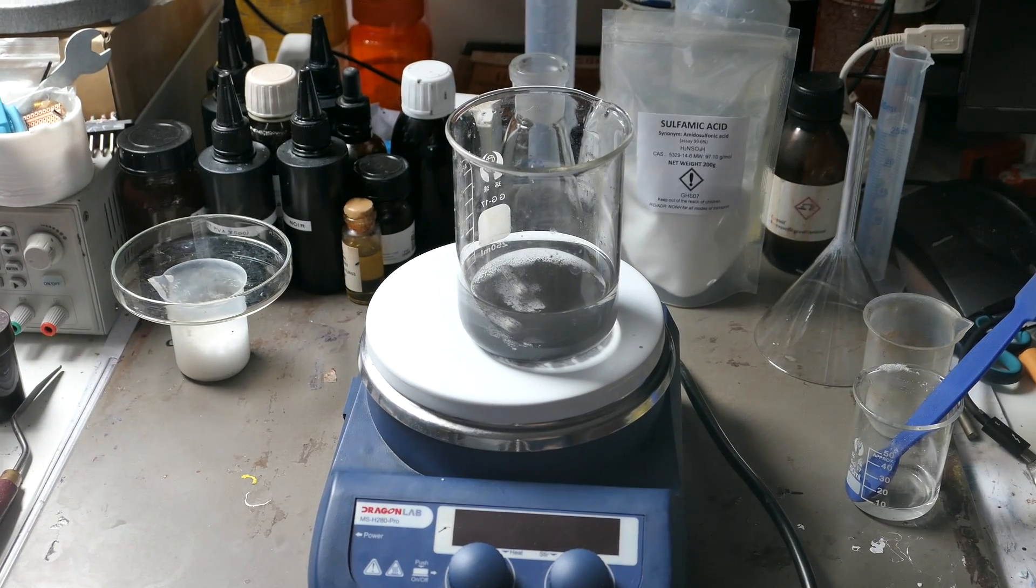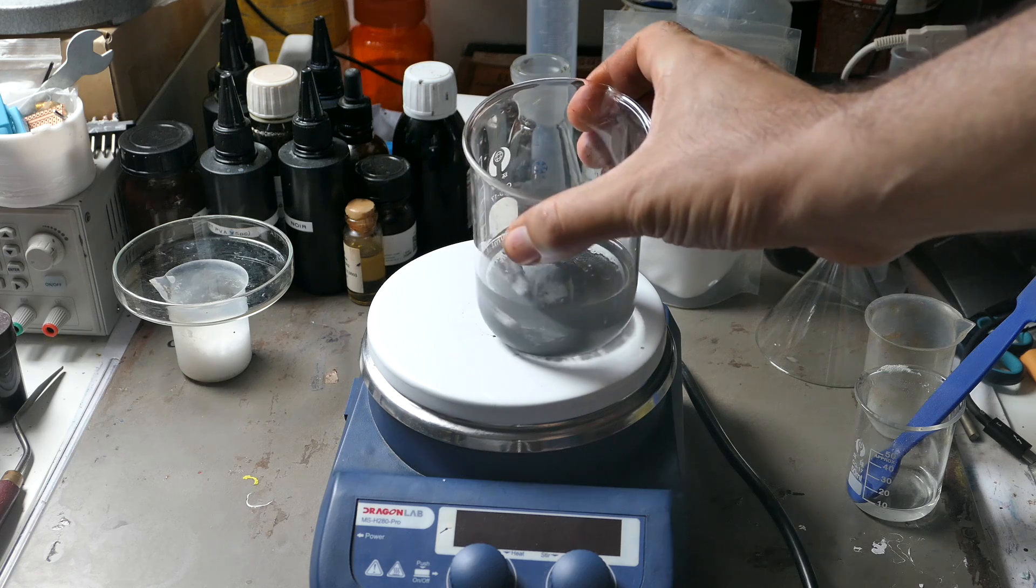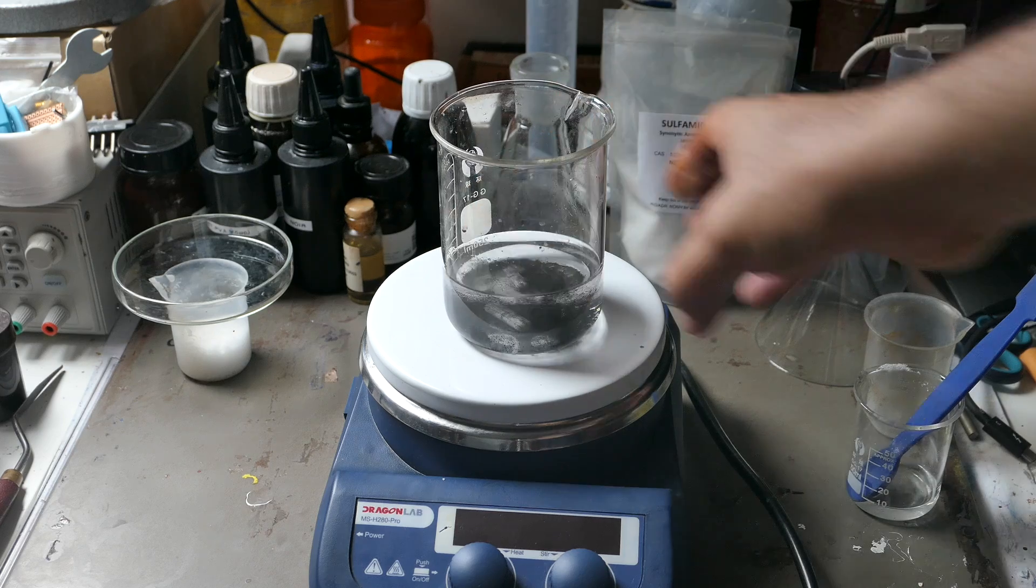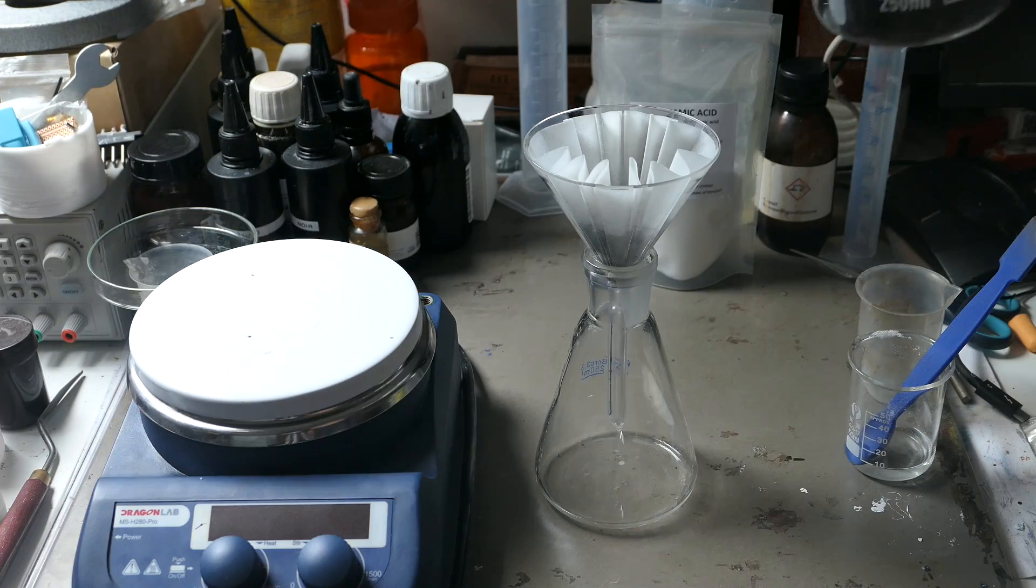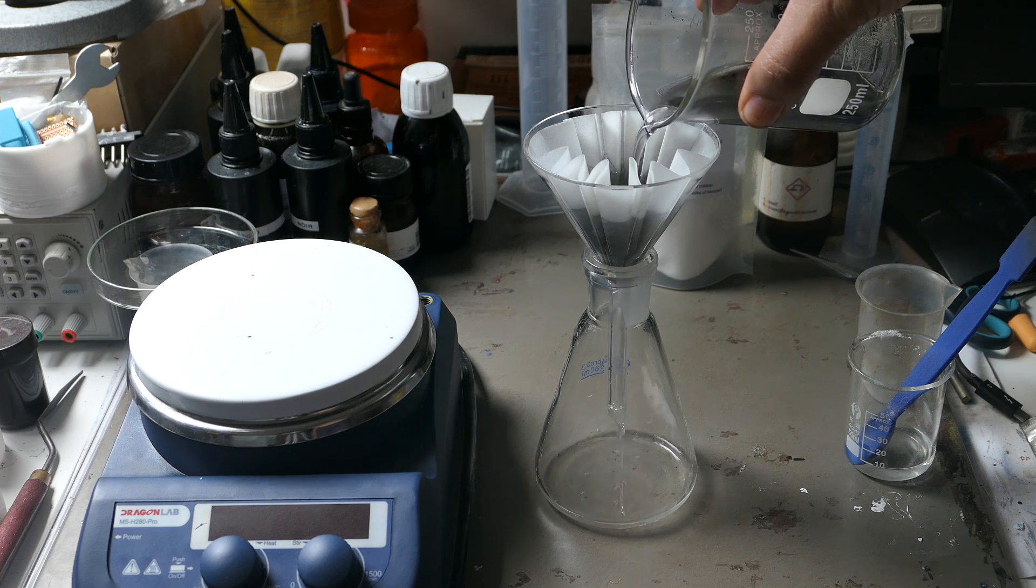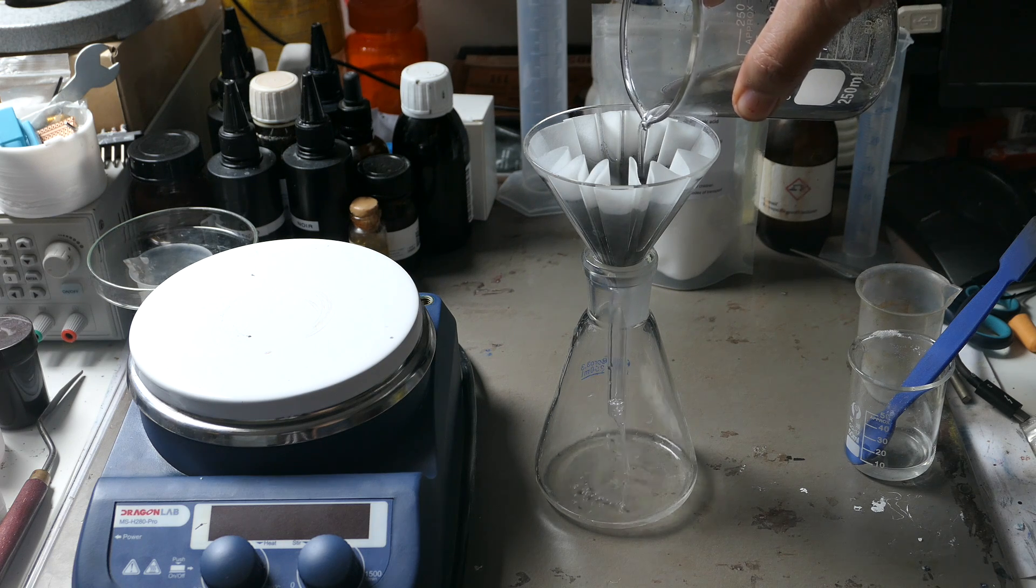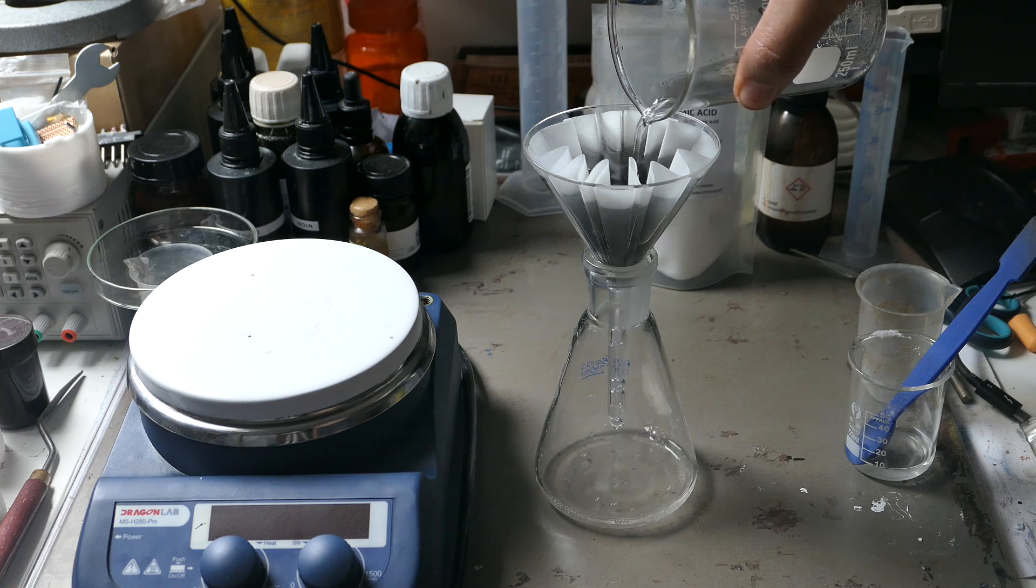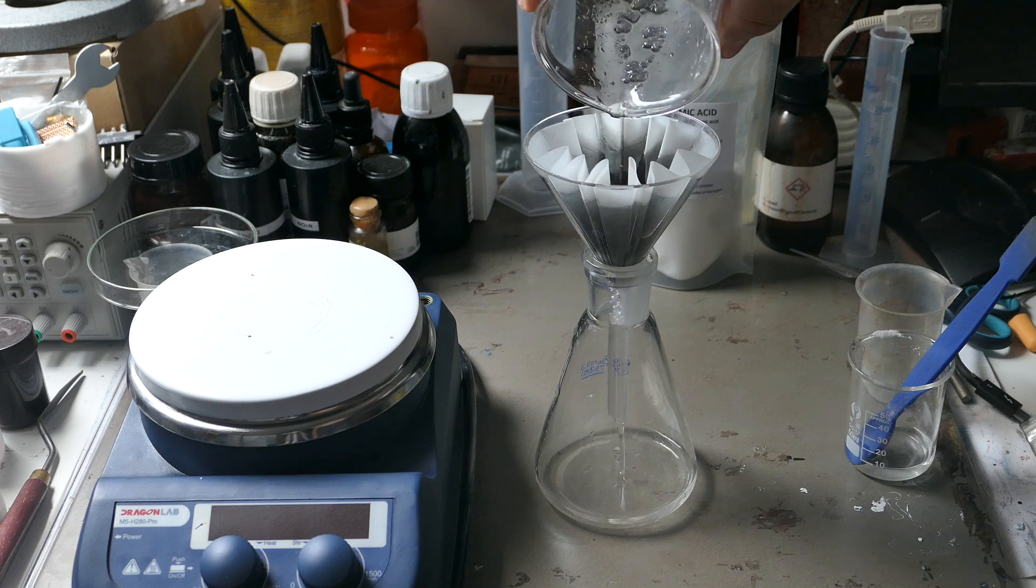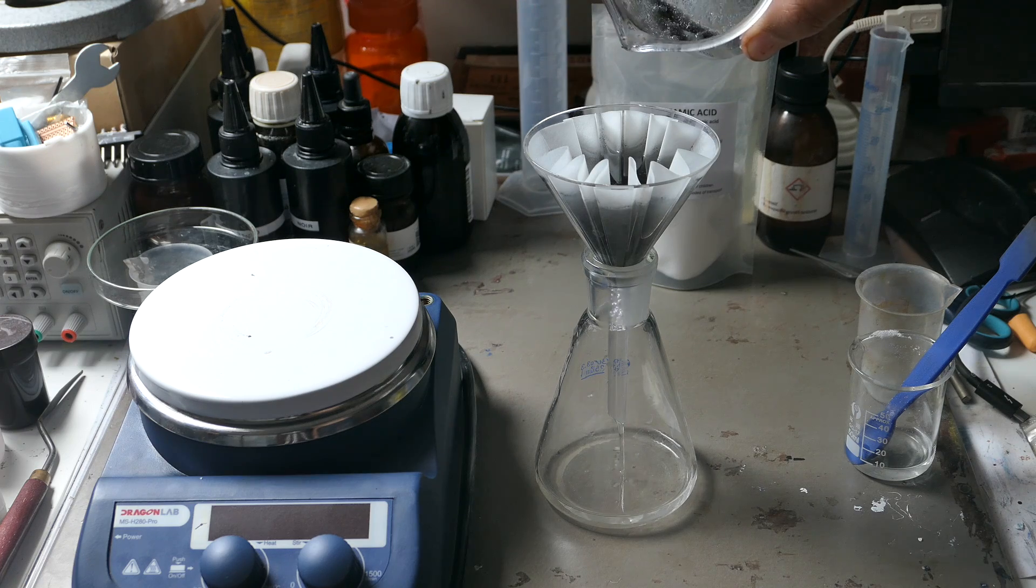Silver sulfonate is formed and is fairly soluble. A few brown traces remain and we'll filter them out, although this isn't essential at this stage.